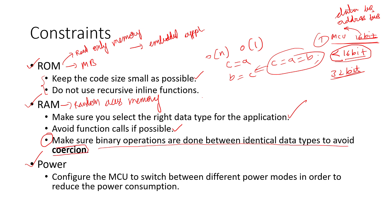What is coercion? Coercion is a process in which the lower data type is converted into higher data type while performing a binary operation. Let me explain.